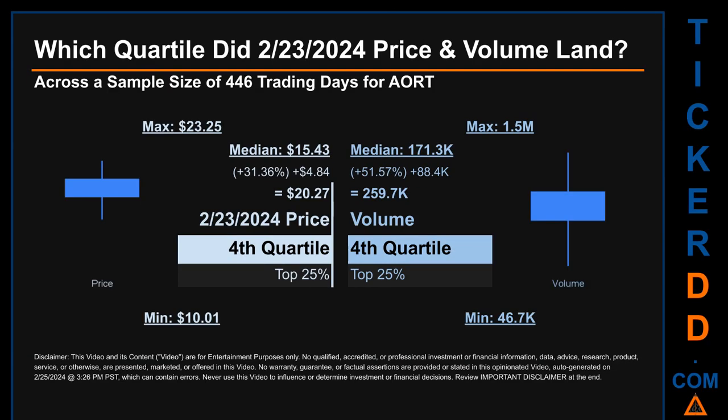Hello, my name is Maria. Which quartile did February 23rd, 2024 price and volume land in? Across a sample size of 446 trading days, the maximum end-of-day price for AORT was $23.25 while the minimum was $10.01. February 23rd's price of $20.27 landed within the fourth quartile, meaning it was within the top 25% of all sampled end-of-day prices. The day's volume also landed within the fourth quartile — the top 25% of all sampled daily volume — which saw a max of 1.5 million and a minimum of 46.7 thousand.